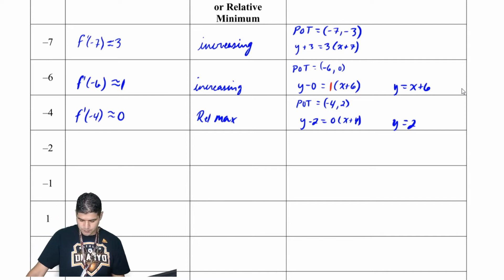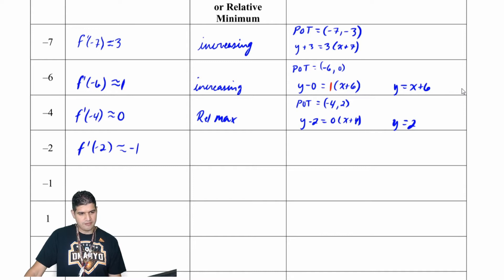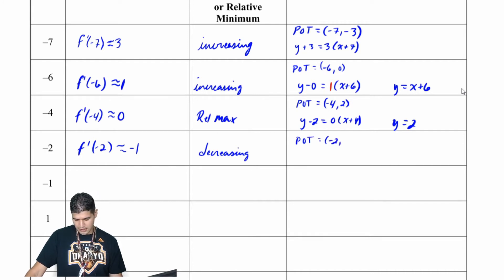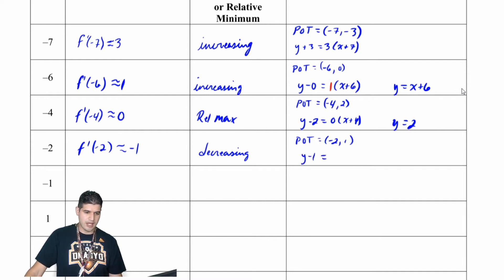At x equals negative 2, f prime of negative 2 is approximately negative 1 and the function is decreasing. My point of tangency is negative 2 comma 1, so the equation is y minus 1 equals negative 1 times x plus 2.